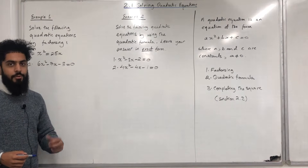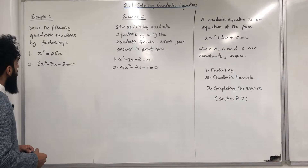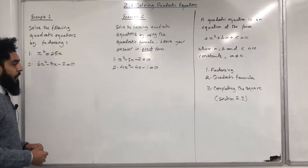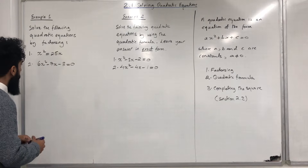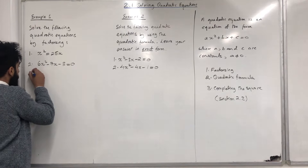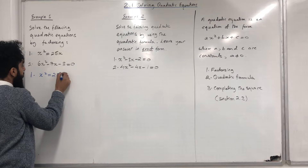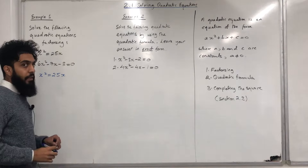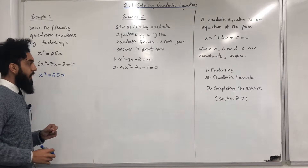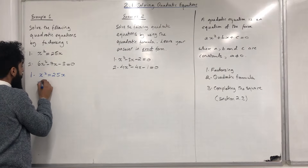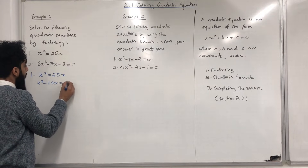Here are some examples. Example number one: solve the following quadratic equations by factorising. We have one and two. Let's start off with one. X² = 25X. The very first step is to take everything to the left-hand side, giving us X² - 25X = 0.